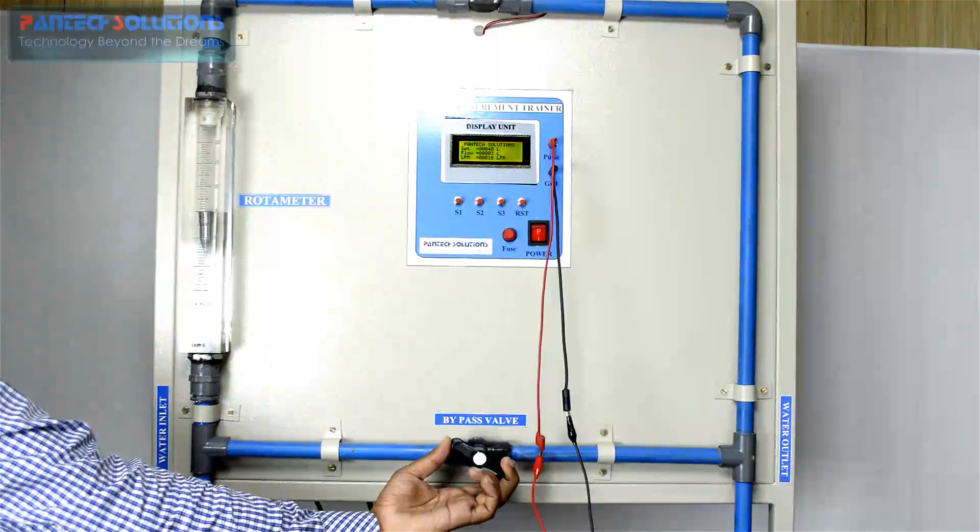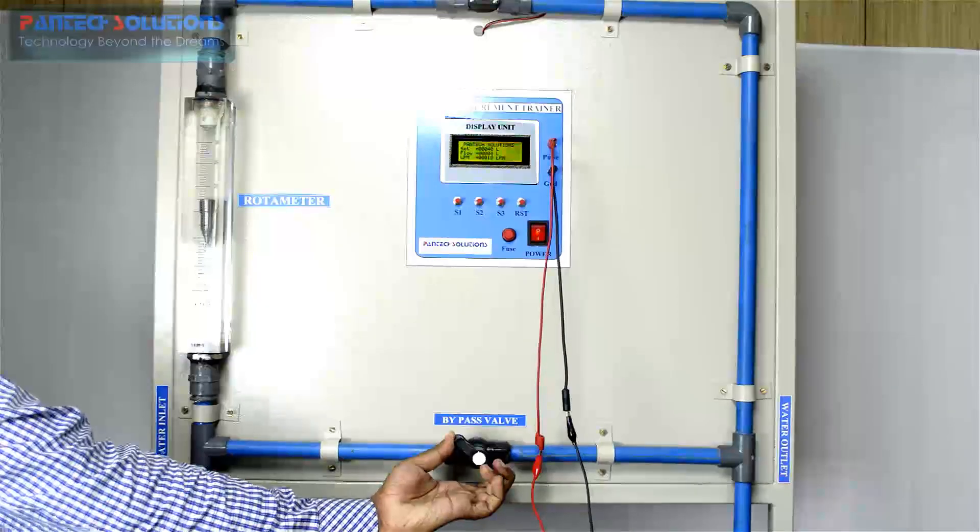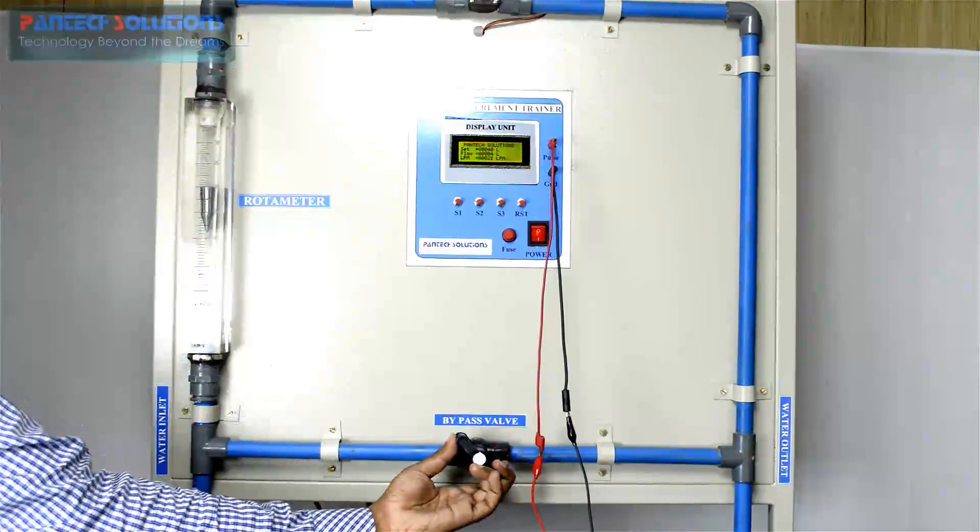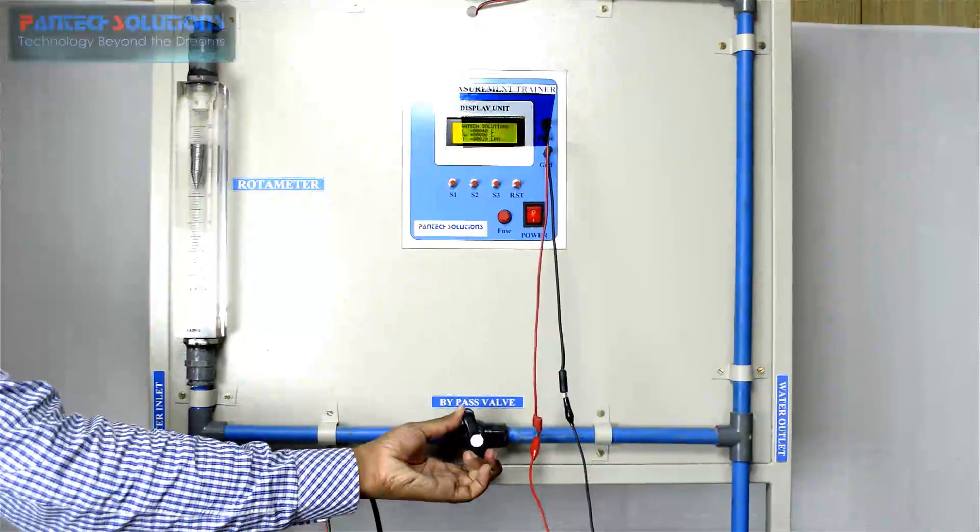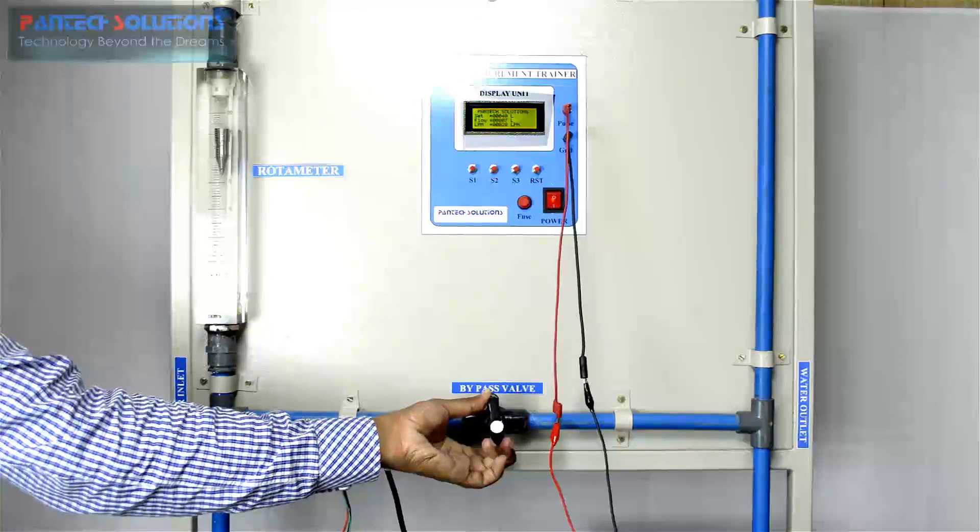By adjusting the bypass valve, the flow rate through the rotameter can be varied correspondingly. The variation can be viewed in the rotameter and in the display unit.